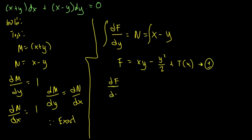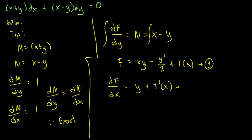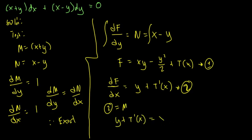Then we get the partial derivative of equation 1 in terms of x: ∂f/∂x = y + t′(x). This is equation 2. We equate equation 2 to M, because we used N. So: y + t′(x) = x + y. Solving for t′(x), we transpose y to get: t′(x) = x.